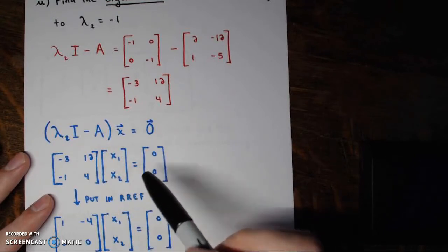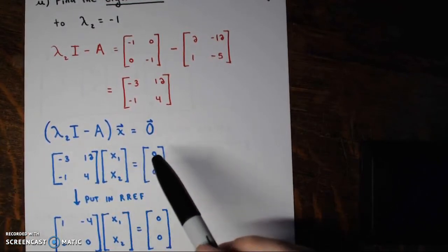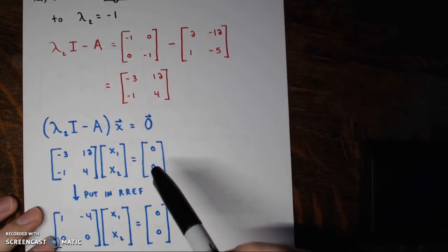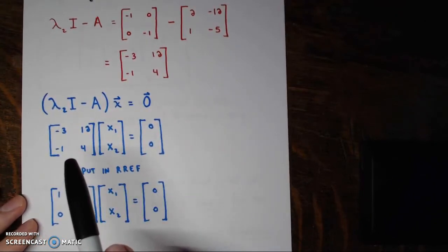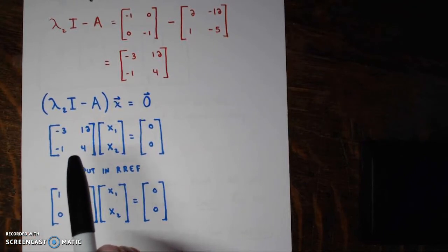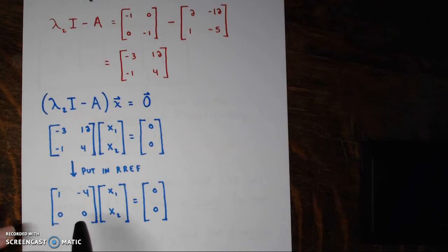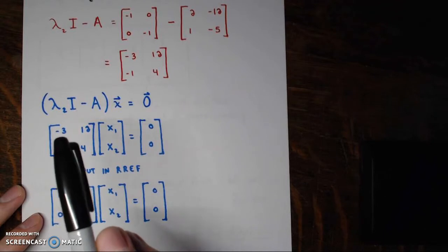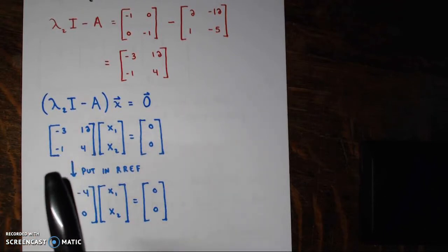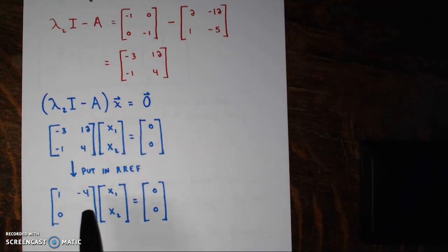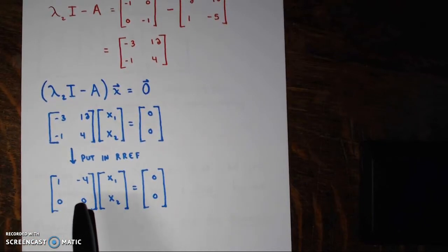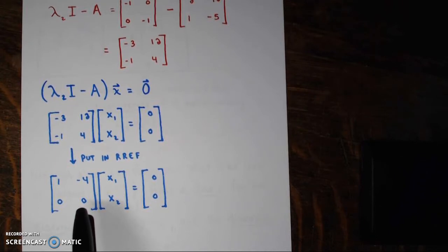The matrix is [-3, 12; -1, 4], and vectors x have components x1, x2. We put the coefficient matrix in reduced row echelon form: switch the rows, multiply the new first row by -3 and add to row 2, then multiply the top row by -1 to get [1, -4; 0, 0]. Again, there should be at least one row of zeros when finding eigenvectors and putting this coefficient matrix in reduced row echelon form.